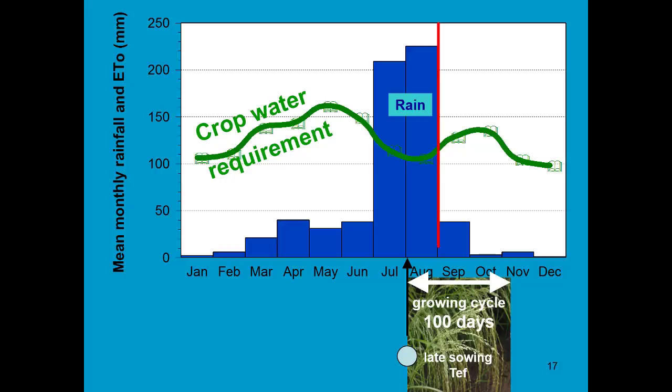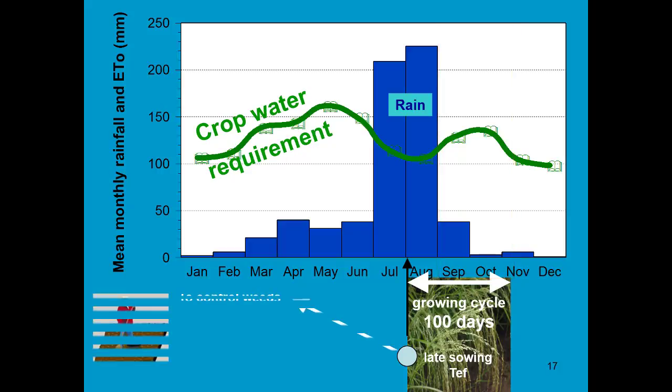And since the tef has a growing cycle of 100 days, the crop experiences water stress at the end of September, in October and beginning of November. One of the reasons for late sowing is to control the weeds.